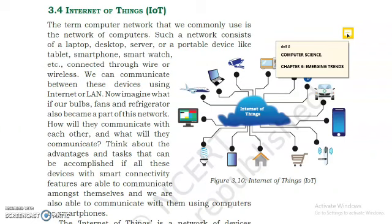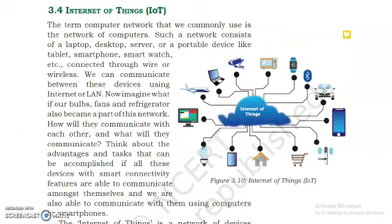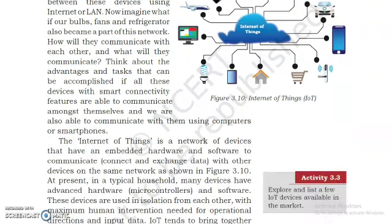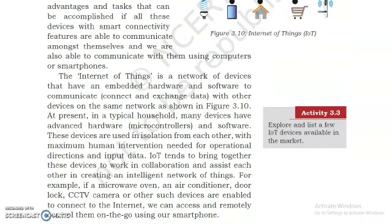We have to understand this logic: these are the things in our house — like our bulbs, our fans, our refrigerators. If they also become part of this network, can they communicate with each other? We can use our smartphones to operate them, for example, like using a remote control to operate these devices within a network. What advantages can they provide us? If our devices also become part of the network, the solution is that the Internet of Things is a network of devices that have embedded hardware and software to communicate with other devices on the same network.